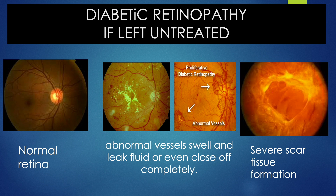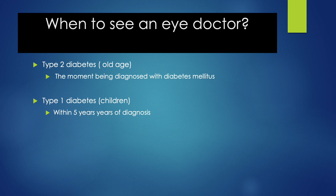What will happen if we don't screen diabetic eyes and leave them untreated? The eye will end up with severe scarring formation and become completely blind. Nowadays, we are seeing this more commonly in younger patients. These changes can be prevented with early detection and early treatment. The next question is: when do they need to see an eye doctor?